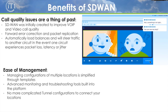SD-WAN can fail over much faster than a traditional firewall because it's determining which circuit is better on almost a per-packet basis. You get fast failover and protection for your video calls and VoIP calls. And no one likes choppy audio or scrambled video.